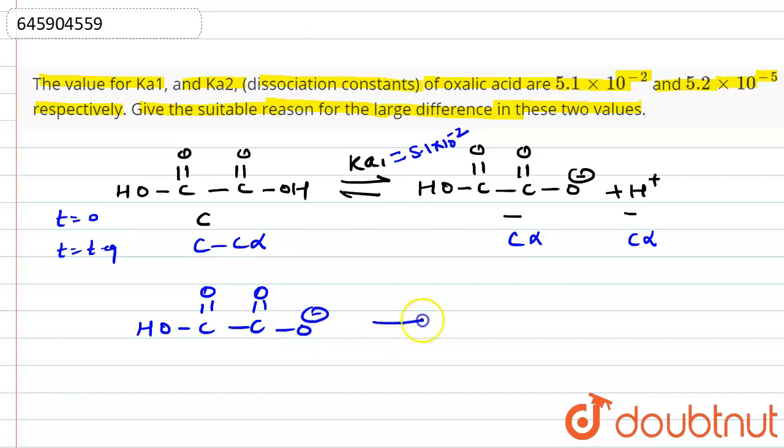When this anion breaks and gives one more H+ ion, we have to define Ka2 value, which means second dissociation constant. The second H+ is given by this anion.